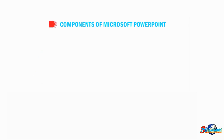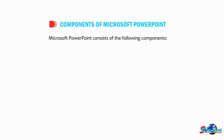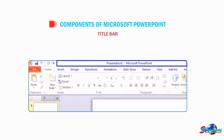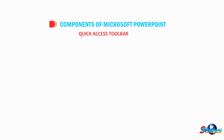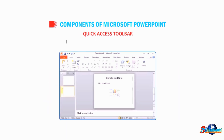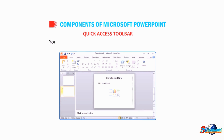Now let us understand the components of Microsoft PowerPoint. Microsoft PowerPoint consists of the following components. Title bar: it displays the name of the presentation on which you are currently working. Quick Access Toolbar: it contains the frequently used commands. You can place this toolbar either above or below the ribbon.